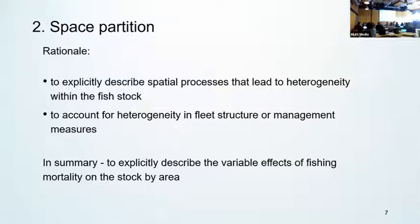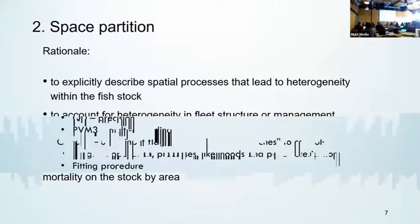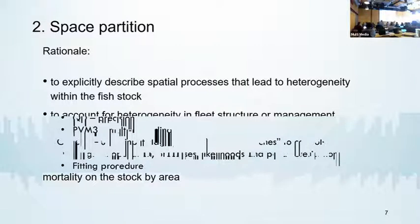To begin with, the space partition. Including spatial partitioning is sometimes desirable. In terms of the biology, one may want to explicitly describe spatial processes that lead to heterogeneity within the stock. And in terms of fishing mortality, one aims to account for the heterogeneity in fleet structure or management measures, which are increasingly becoming more complex. So together one can explicitly describe the variable effects of fishing mortality on stock by area.